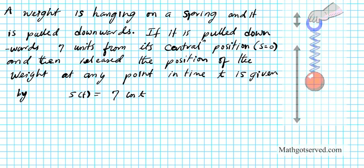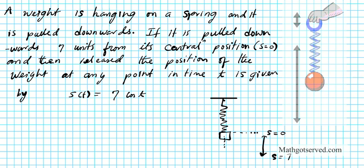So let's say we had a weight — let me just make a sketch for you. A weight is attached to a spring. This initial position is the s equals zero position, which is when the weight is at rest. And then it was pulled down seven units from its central position to s equals seven. So this weight was pulled down and then released. When you pull it down and release it, it is going to exhibit simple harmonic motion — basically repeating this up and down movement theoretically forever if there is no resistance in the spring.